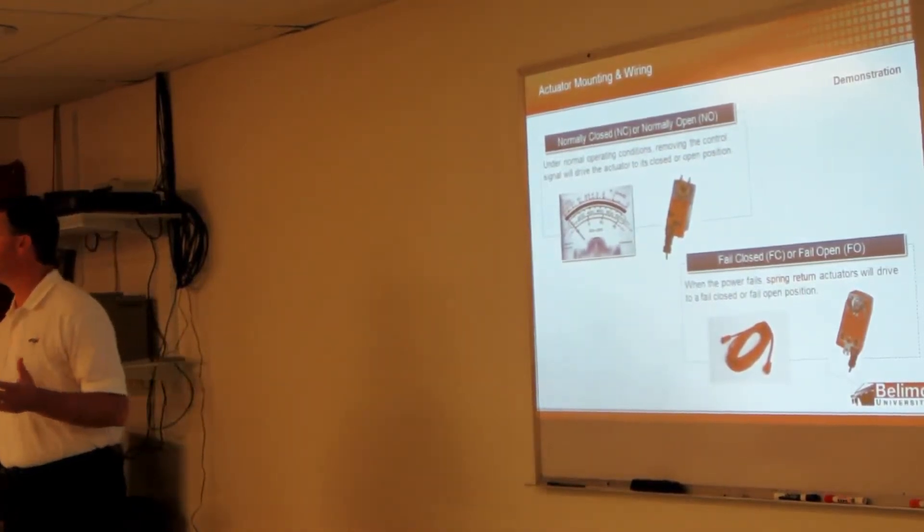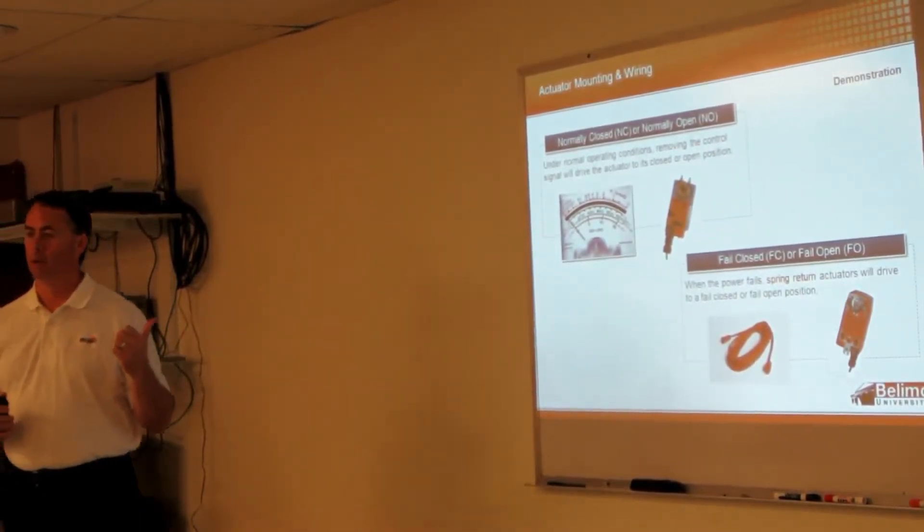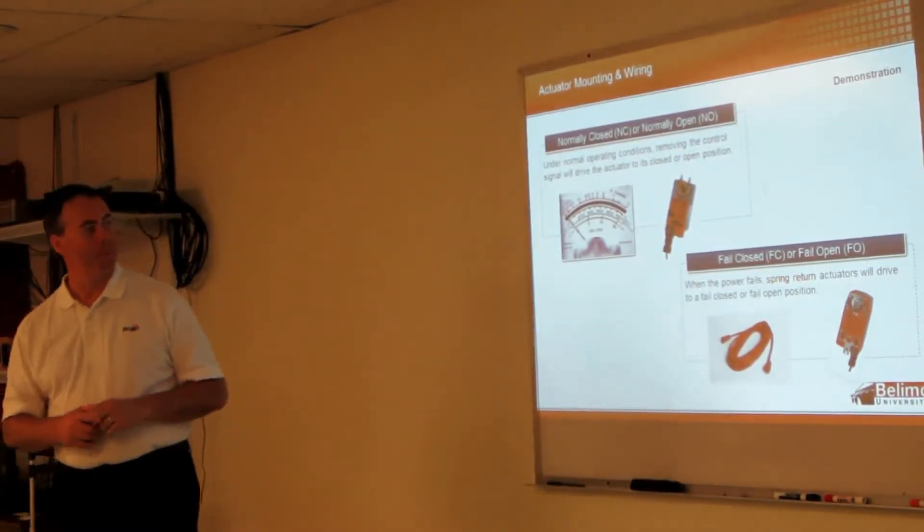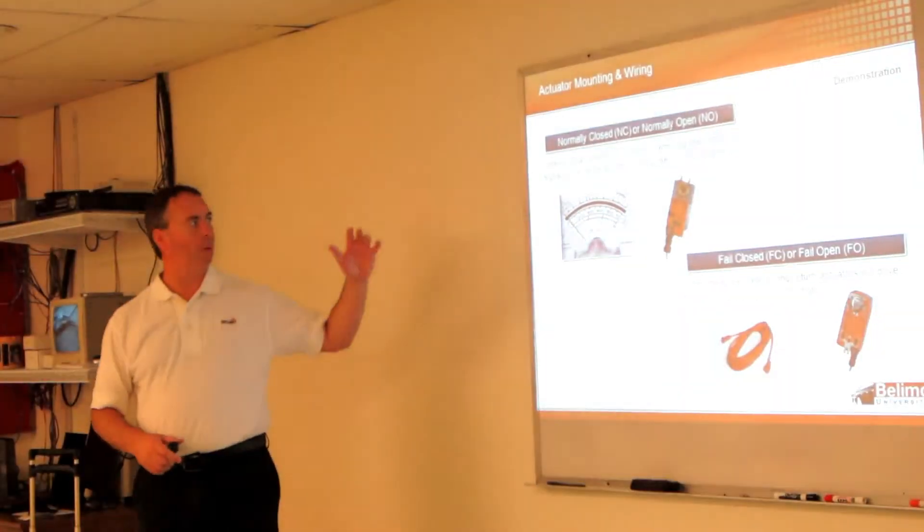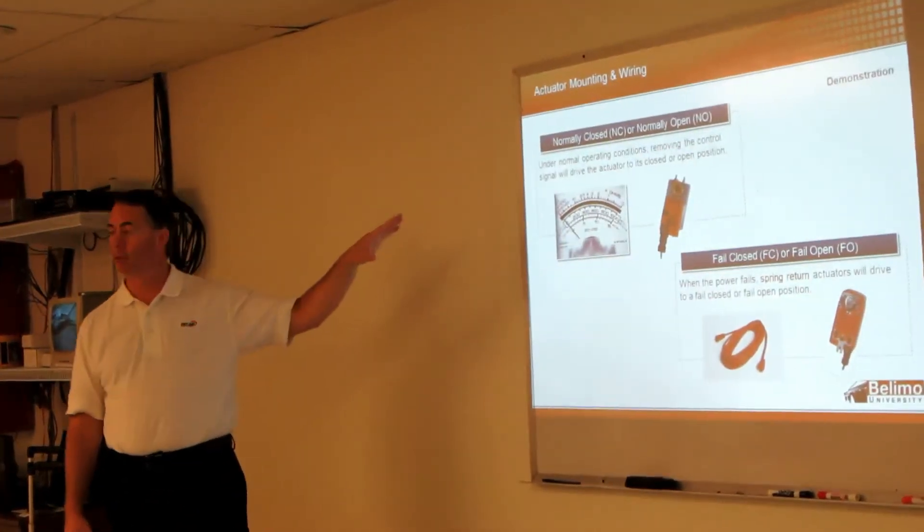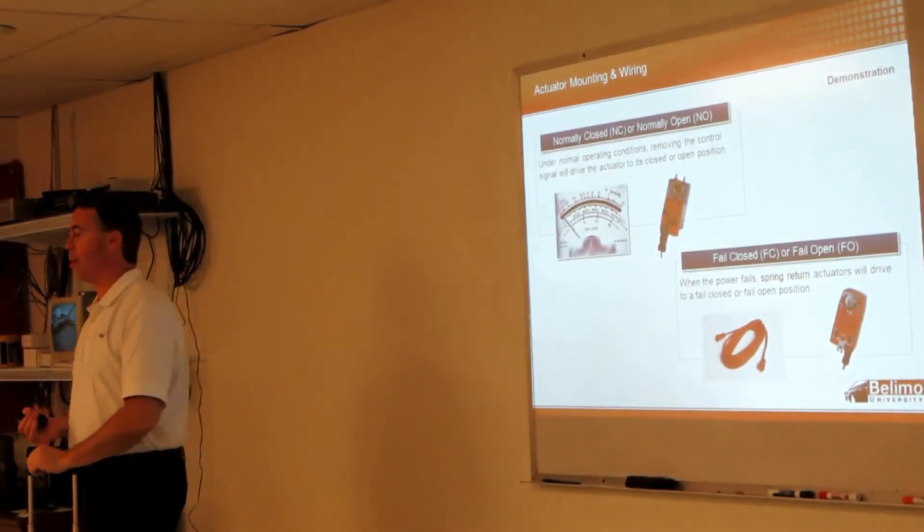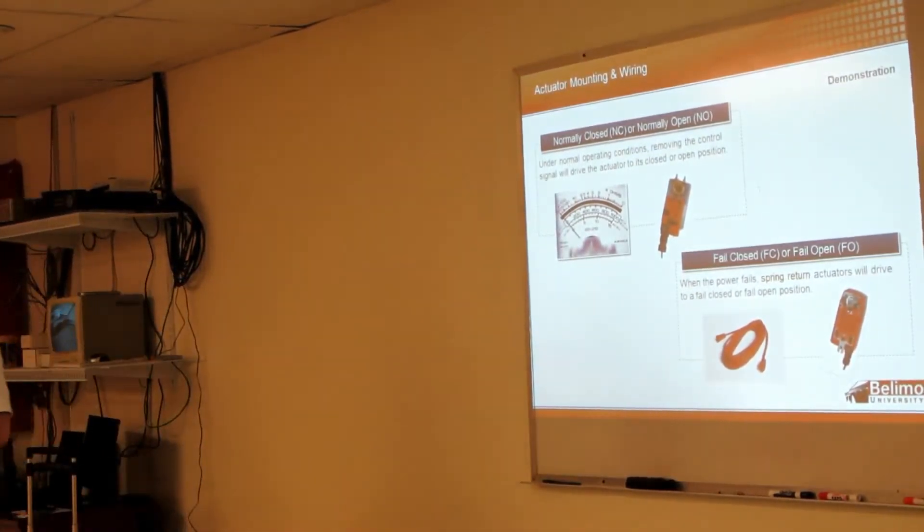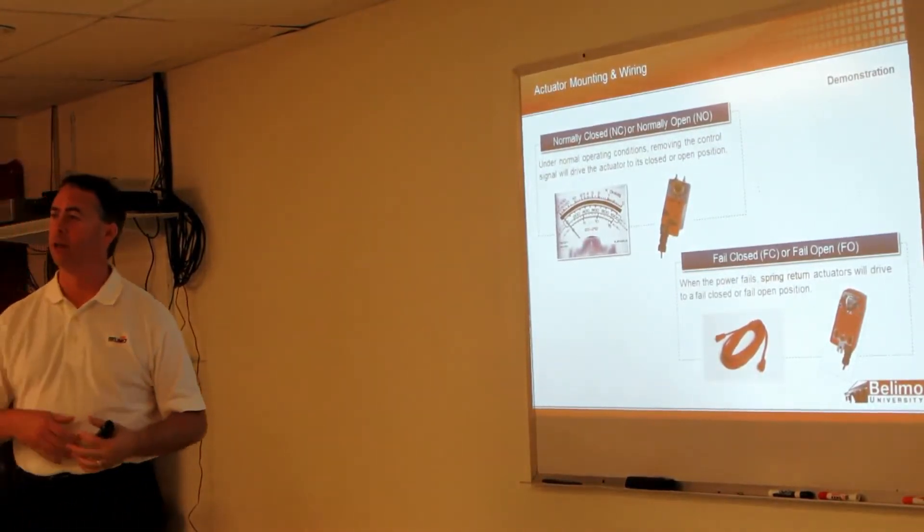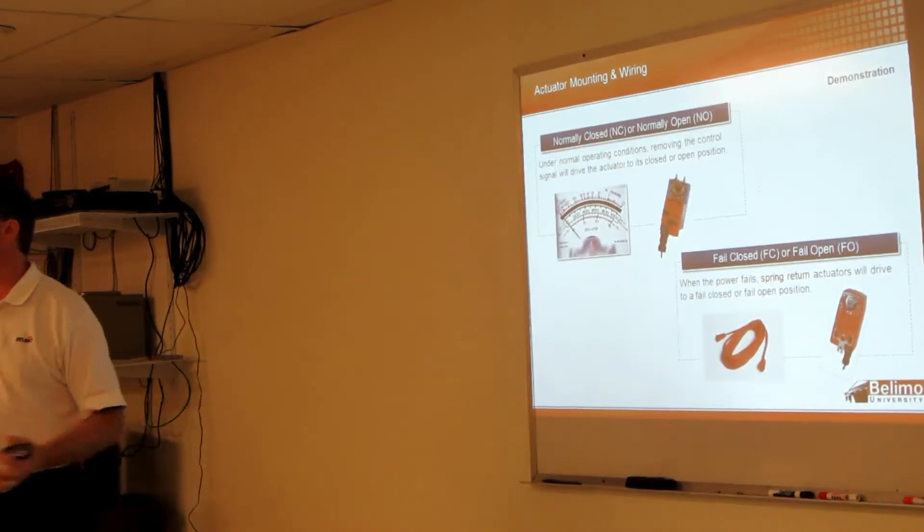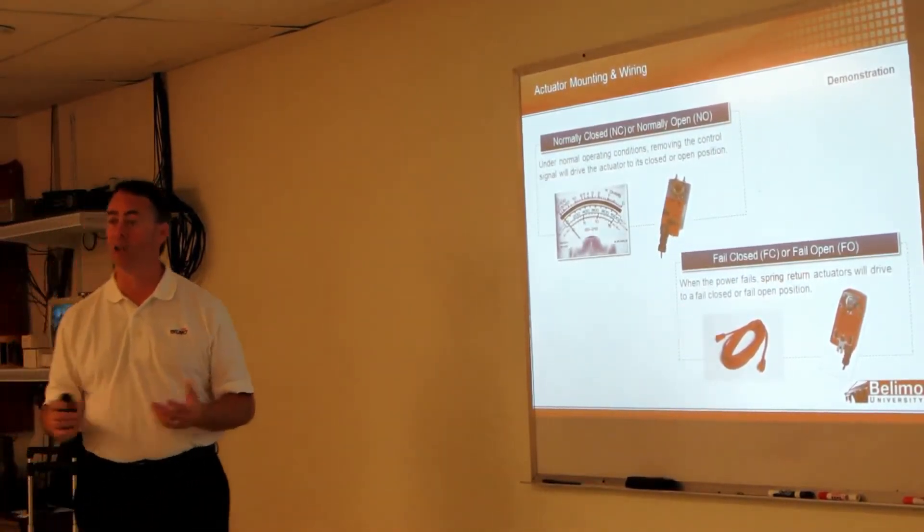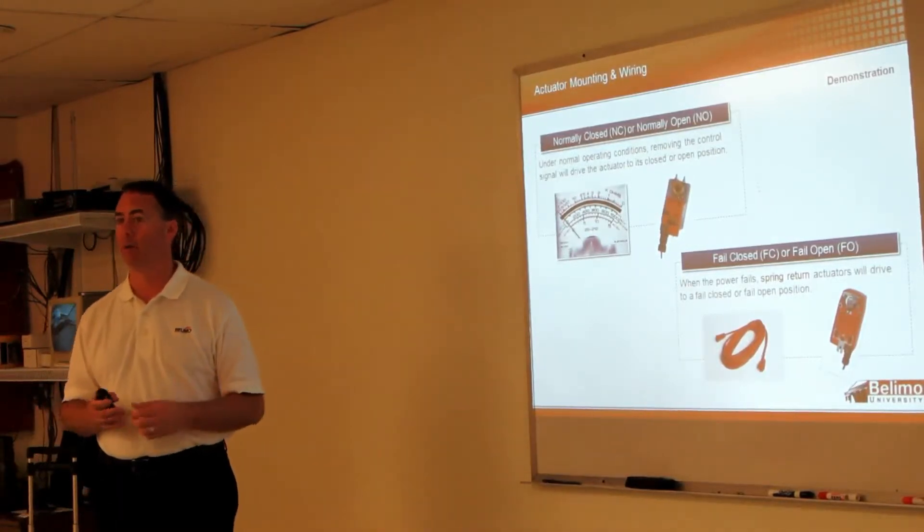Any questions before I go into this section? This section usually brings up some questions. What we're going to talk about here is normal position. So the normal position is under normal operating conditions, what's going to happen if you remove the control signal? Which certainly could happen. Somebody comes along and accidentally runs a piece of sheet metal across during the building phase or whatever. You can cut the control signal. What's going to happen? Spring control is going to go back.